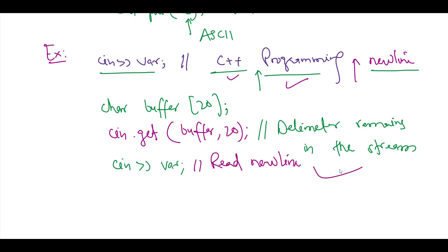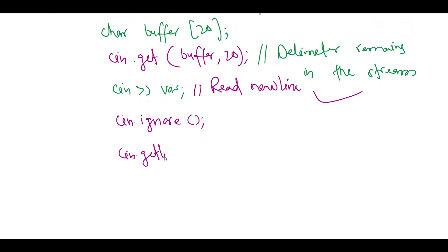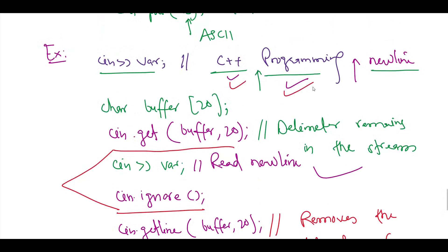To read a full line including spaces, you can create a buffer array of some size — for example, size 20 — and use cin.get(buffer, 20), which reads the entire input including spaces. However, cin.get leaves the newline delimiter in the stream, so a subsequent read will pick it up. To remove it, use cin.ignore, which reads and discards the designated number of characters. Alternatively, you can use cin.getline(buffer, 20), which is similar to cin.get but automatically removes the delimiter from the input stream.